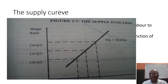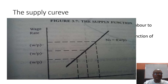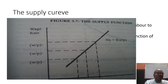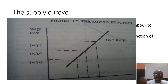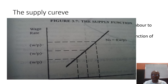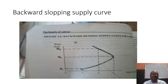Ordinarily, the supply curve is a monotonically increasing function of the wage rate — the higher the wage rate, the more hours that are supplied. At wage rate W1 the worker supplies L1, at W2 they supply L2, at W3 they supply L3. That is why the supply curve is a monotonically increasing function of the wage rate.